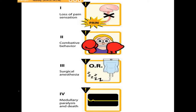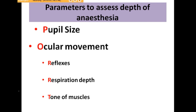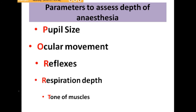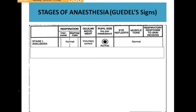There are four stages of anesthesia: from loss of pain sensation in stage 1, to combative behavior or excitement in stage 2. Stage 3 is the stage of surgical anesthesia, and stage 4 is medullary paralysis at the highest dose. Parameters used to assess depth of anesthesia include pupil size, absence of ocular movements, absence of reflexes, respiration depth, and muscle tone. Guedel divided the stages of anesthesia into four stages.